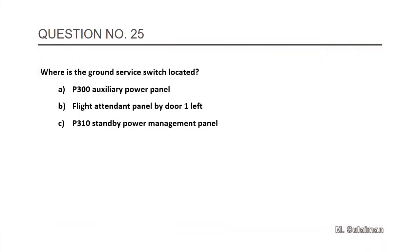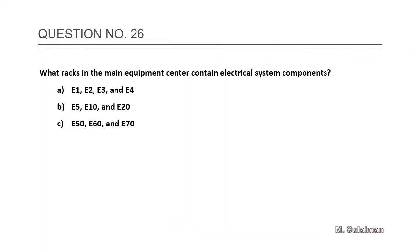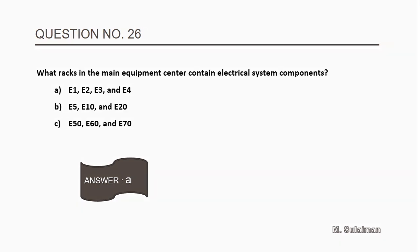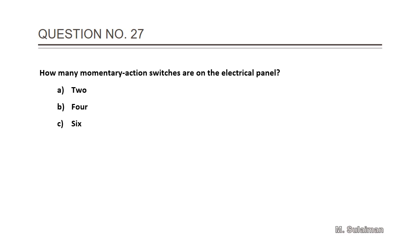Number 25: Where is the ground service switch located? Answer is B: flight attendant panel by door one left. Number 26: What racks in the main equipment center contain electrical system components? The answer is A: E1, E2, E3, and E5-10 rack. Number 27: How many momentary action switches are on the electrical panel?